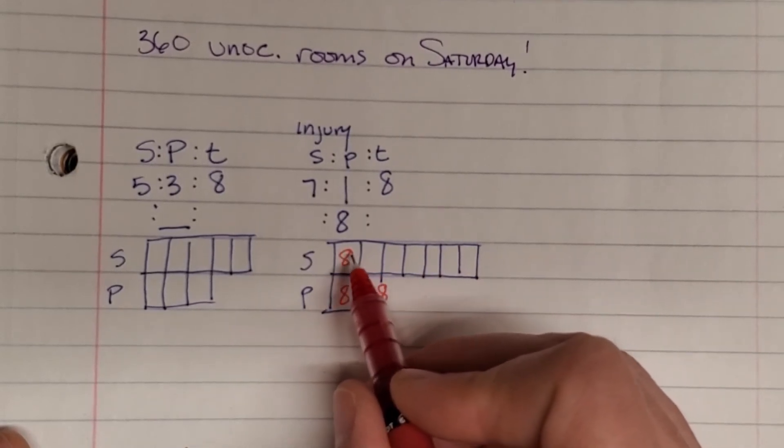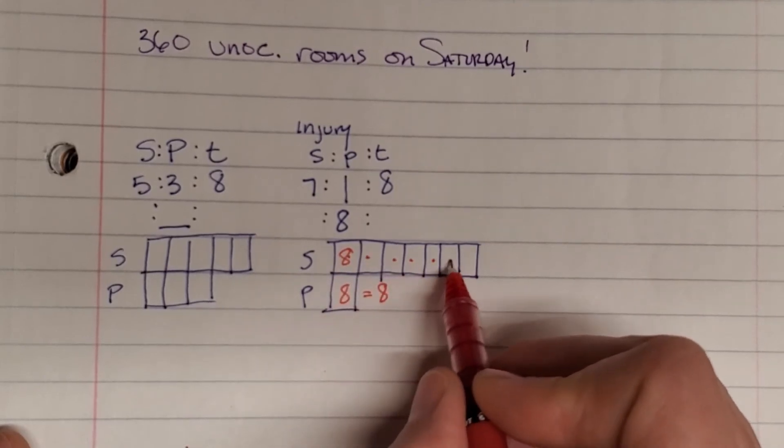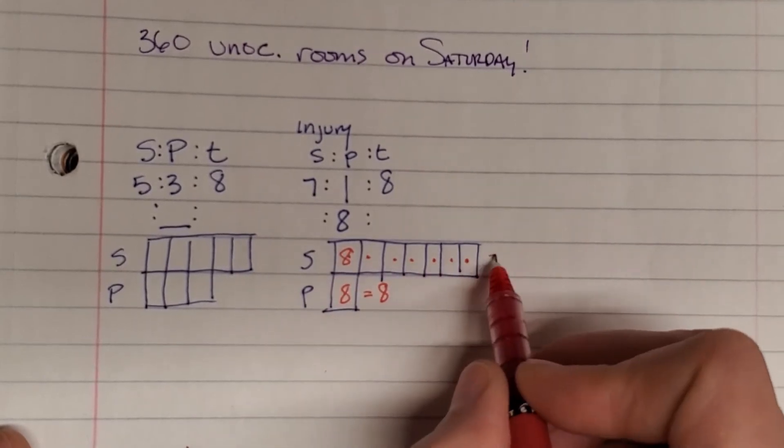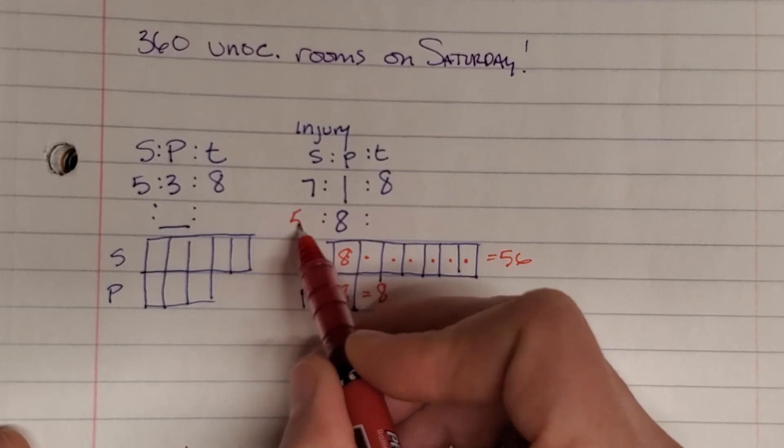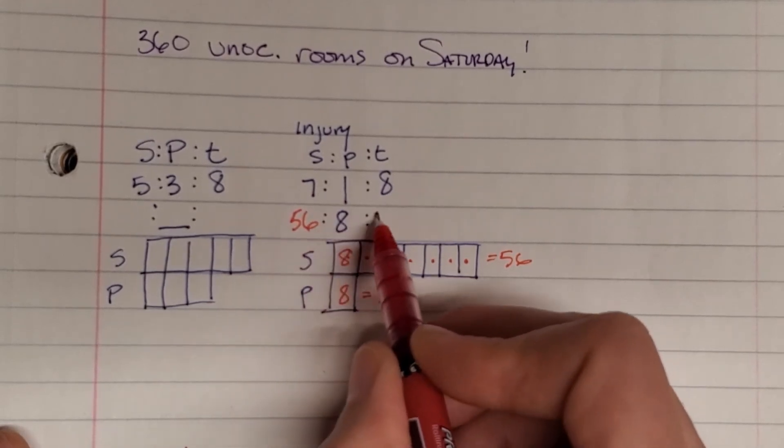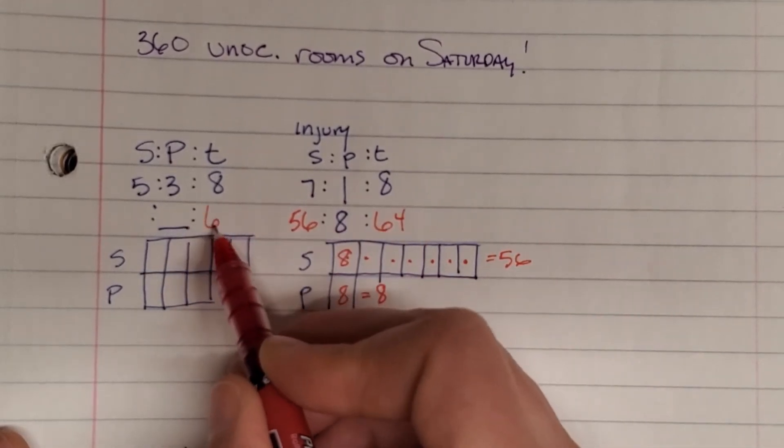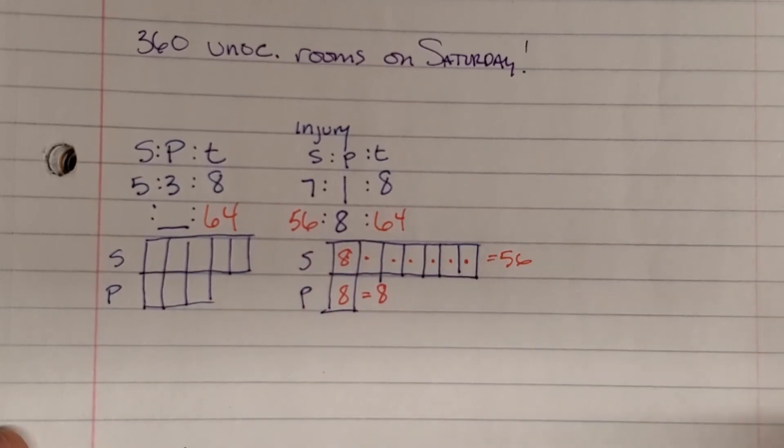So eight times one, two, three, four, five, six, seven, eight times seven, 56, 56. And 56 plus eight is 64. Same amount of reps. Remember? Okay.